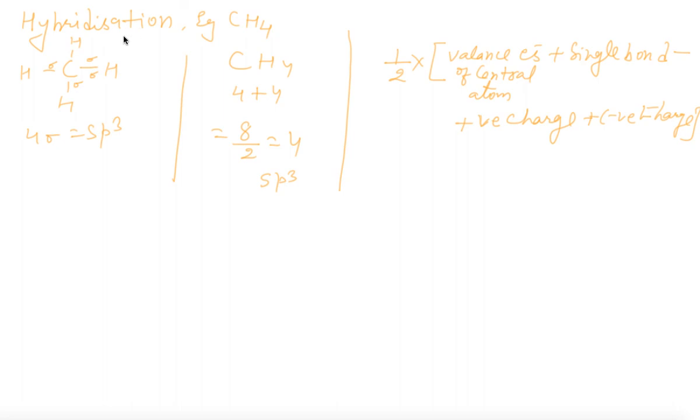You can find out hybridization this way: If CH4 is there, four sigma bonds means SP³. Take outermost electrons - carbon is 4, hydrogen is 4. Four plus four equals eight, then divided by 2 equals 4, so SP³. If the sum is greater than 8, then divide by 8. You can take example of PCl5 - phosphorus has 5 electrons, chlorine has 7. Five times 7 equals 35, plus 5 equals 40. Forty divided by 8 equals 5, which gives SP³d.